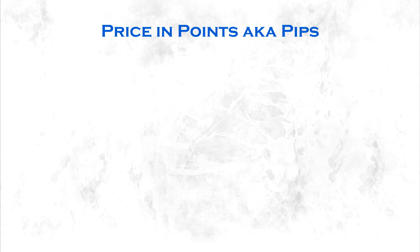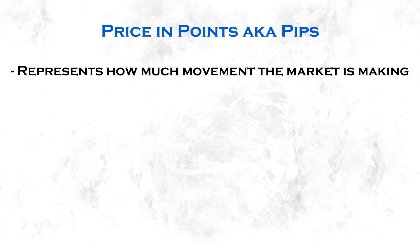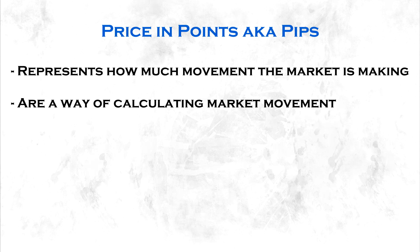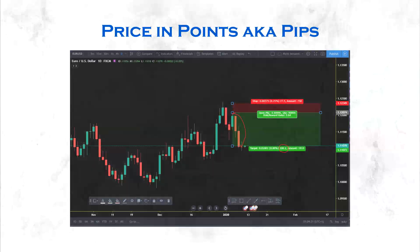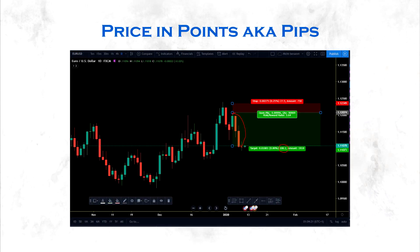Next thing I want to talk about is pricing points, also known as pips. Pips represent how much movement the market is making and are a way of calculating market movement. For example on the Euro US dollar, the move I have highlighted is a 100 pip move. So whenever you hear the word pips, it means we are talking about market movement. You're going to learn how to calculate that in another lesson.